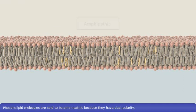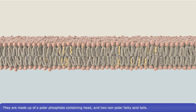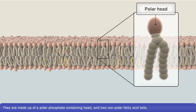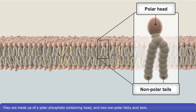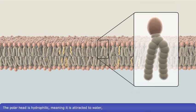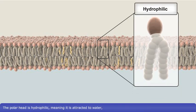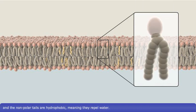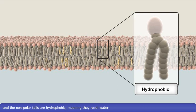Phospholipid molecules are said to be amphipathic because they have dual polarity. They are made up of a polar phosphate-containing head and two nonpolar fatty acid tails. The polar head is hydrophilic, meaning it is attracted to water, and the nonpolar tails are hydrophobic, meaning they repel water.